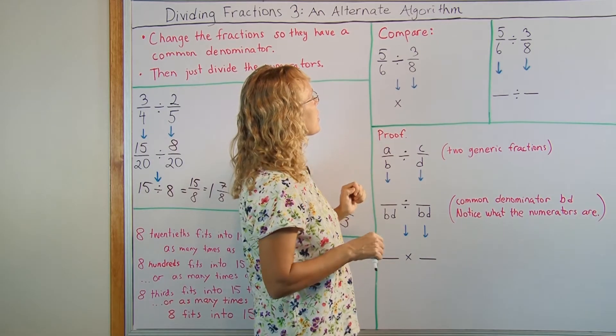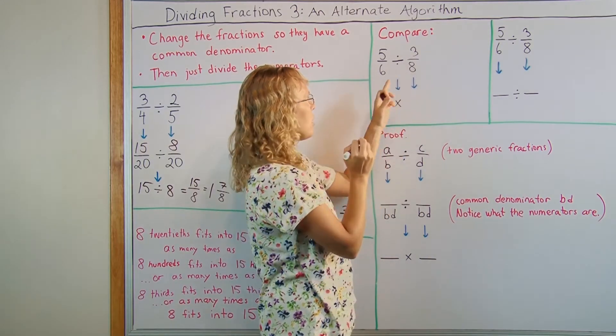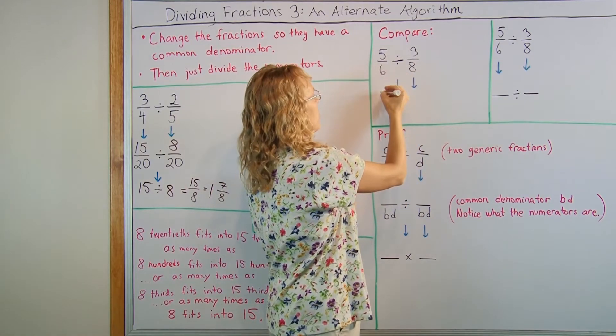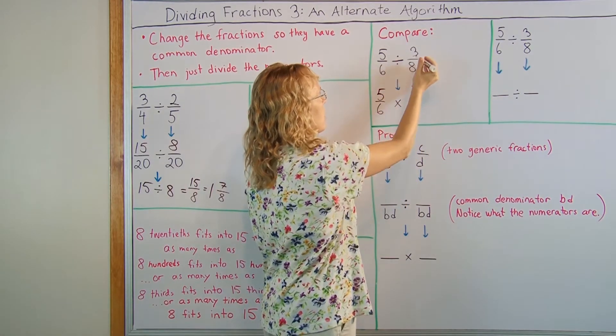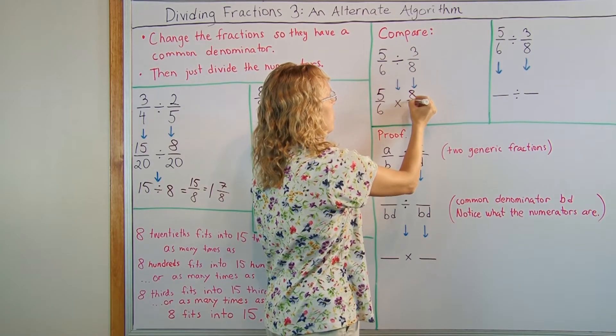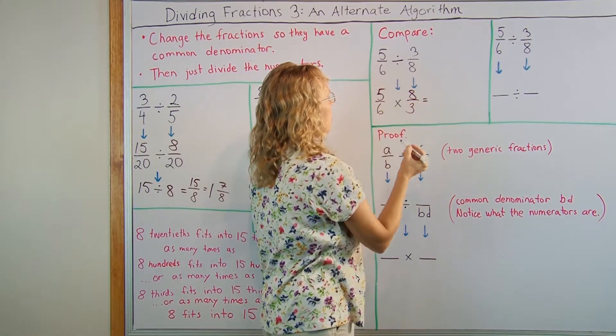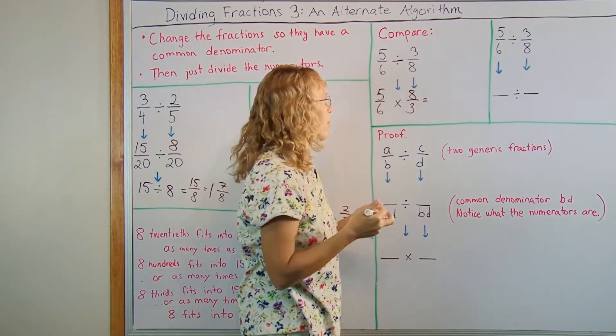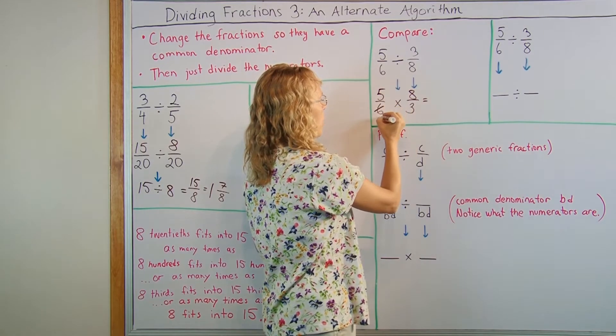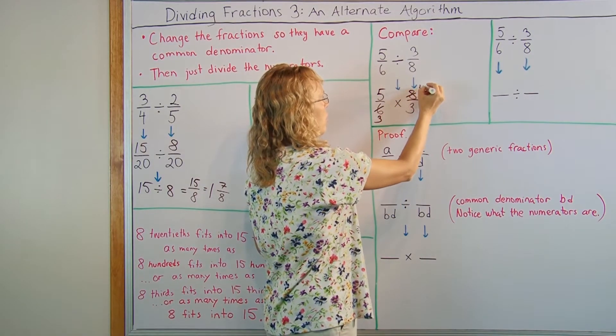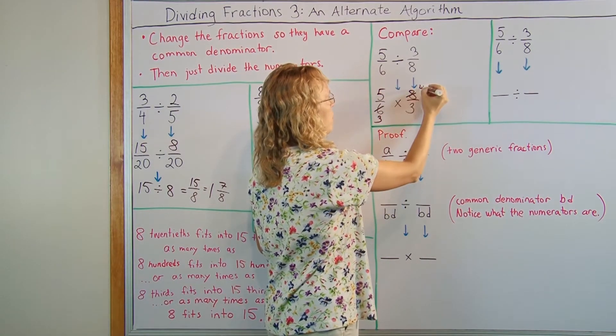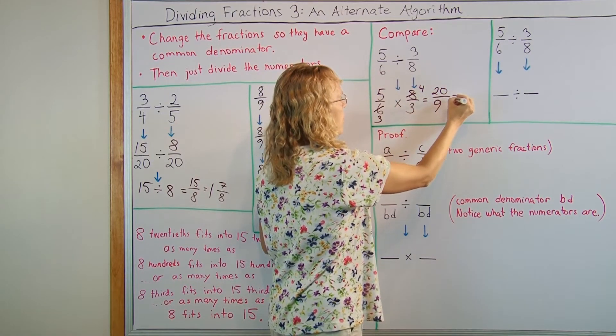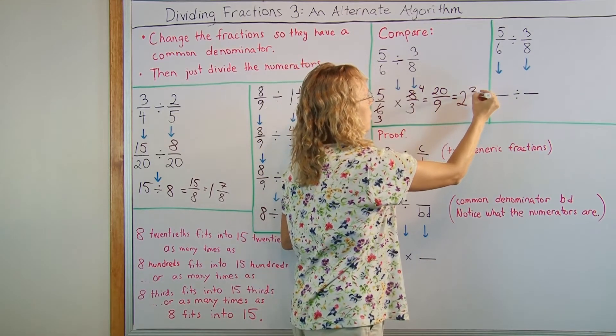Here's a division problem. Let's solve it the normal way where the division is changed into multiplication and we will use the reciprocal of this. So 5 sixths times and then we'll flip this to 8 over 3. Now here I have 6 and 8 so before I multiply I can simplify. Both are divisible by 2 so I get 3 here and 4 here and I get 5 times 4 is 20 and then 3 times 3 is 9. This is 2 and 2 ninths.